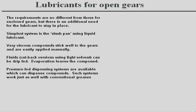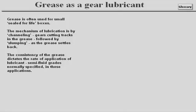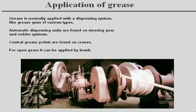The requirements for open gears are no different from those of enclosed gears, but there is an additional need for the lubricant to stay in place. Grease is often used for small, sealed-for-life boxes. Grease is normally applied with a dispensing system like grease guns of various types.